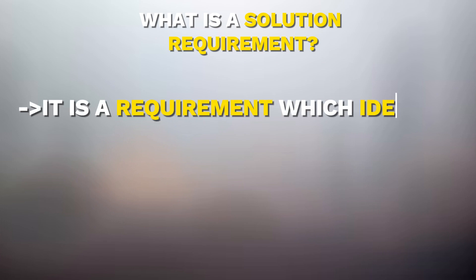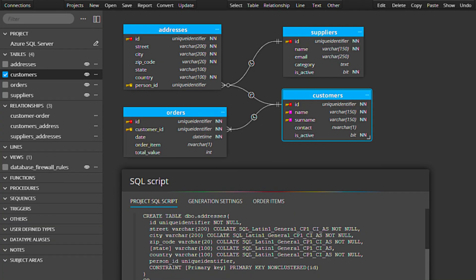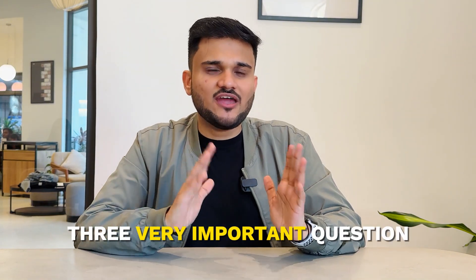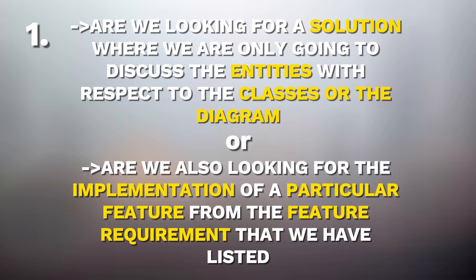Apart from feature requirements, there is one more very important set: solution requirements. Solution requirements identify what type of final coding solution you are expected to build. A lot of times in a particular interview, the interviewer is only expecting you to have entity diagrams or entity classes made with no actual feature implementation. If you are wasting time doing a lot of feature implementation when that's not expected, that might not be the best approach. The first question I always ask is: are we looking for a solution where we only discuss the entities — the classes or the diagram — or are we also looking for the implementation of a particular feature?